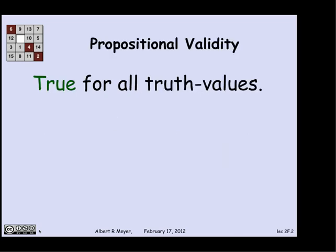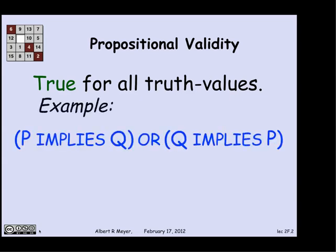Let's remember for propositional validity, if you have a propositional formula with variables taking truth values ranging over true and false, then a formula is valid when it's true for all possible truth values. Here's an example: p implies q or q implies p. You can check that for the four possible environments of p and q, this or will come out to be true.